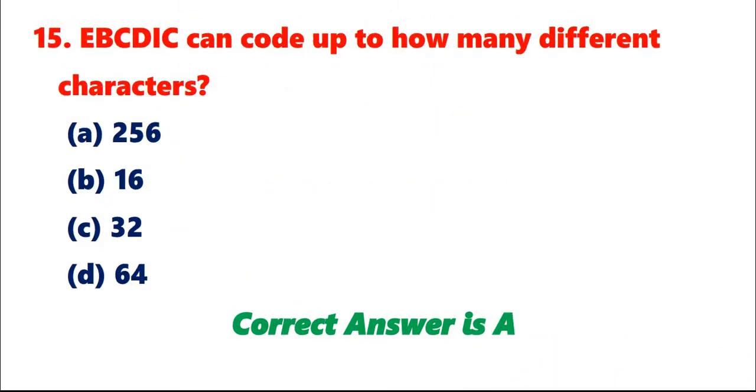Question 15: EBCDIC can code up to how many different characters? A. 256. B. 16. C. 32. D. 64. Correct answer is A.